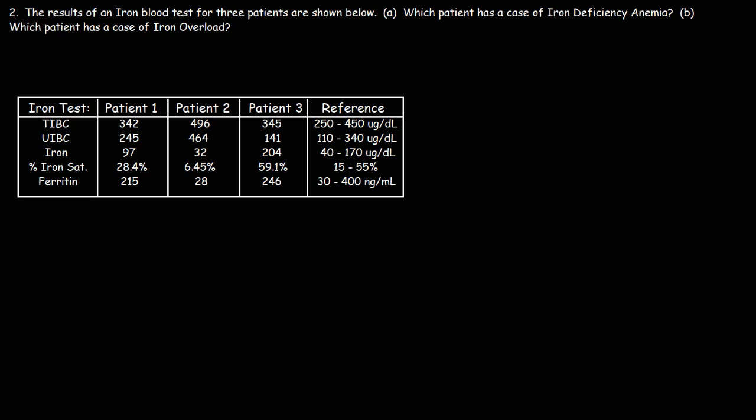Number two, the results of an iron blood test for three patients are shown below. Part A, which patient has a case of iron deficiency anemia? Go ahead and take a minute and review the table to see which patient has that.